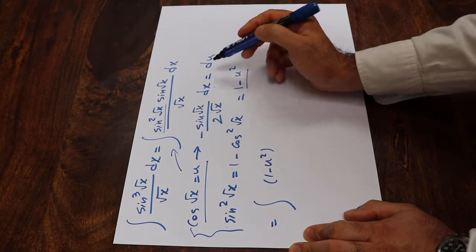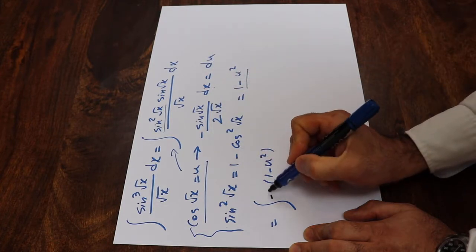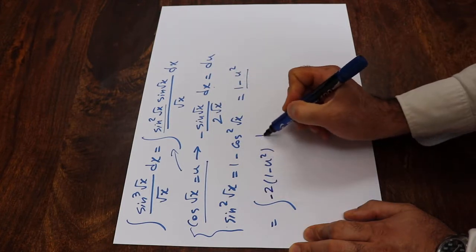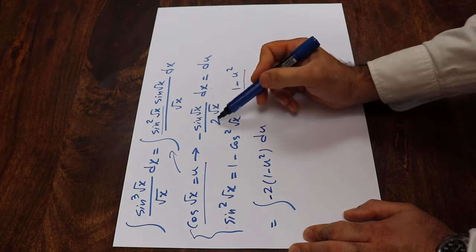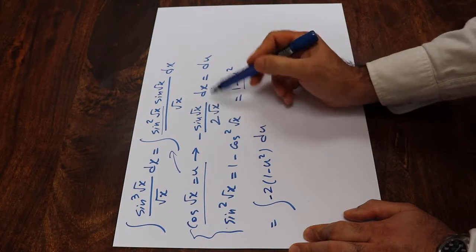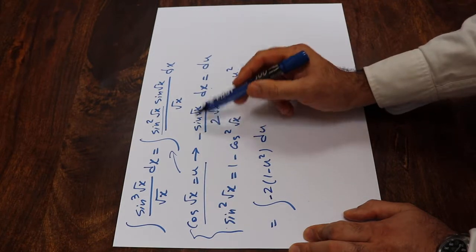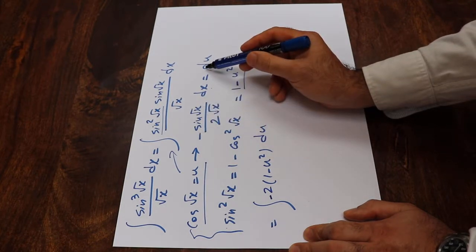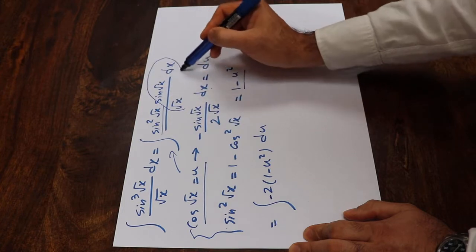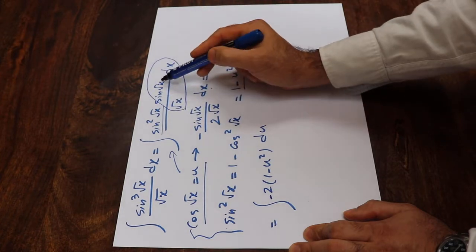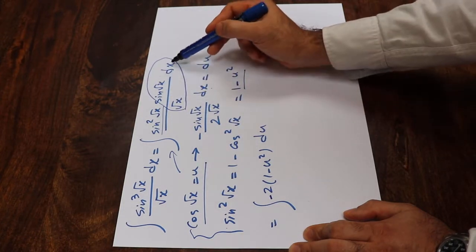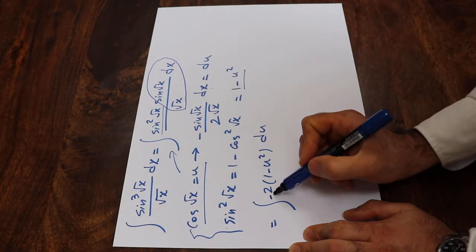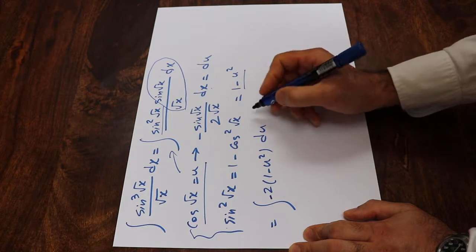So here we have minus 2 du. All I did was multiply everything by 2 and the minus sine goes to the other side. Therefore instead of sine of square root of x divided by square root of x dx I simply write minus 2 du.